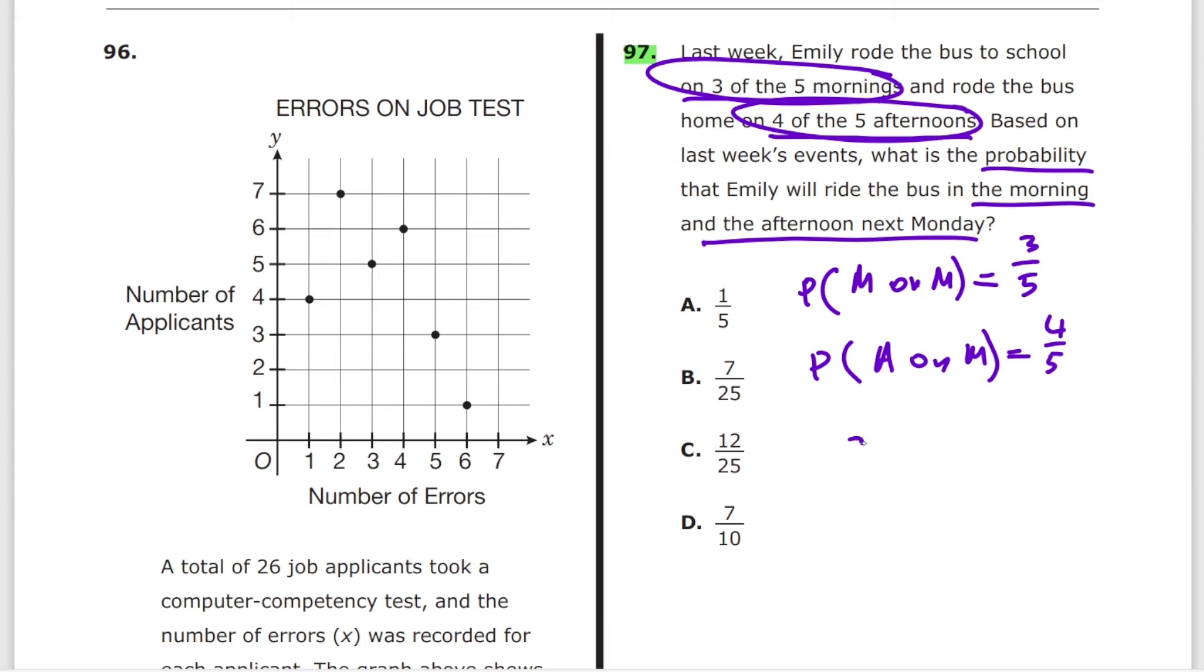Some of you will add. 3 out of 5 plus 4 out of 5 is equal to 7 out of 5. And you don't even have this option, so that's great. Because in reality, what you have to do is you need to multiply. 3 out of 5 multiplied by 4 out of 5. That's equal to 12 over 25. And the answer is C.